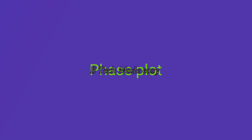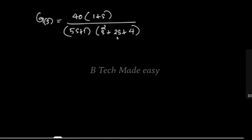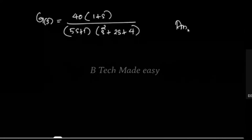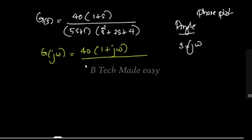Now the phase plot. G(jω) = 40 into (1 + jω) divided by (5jω + 1) into (jω)² + 2jω + 4). We substitute s = jω as normal procedure.